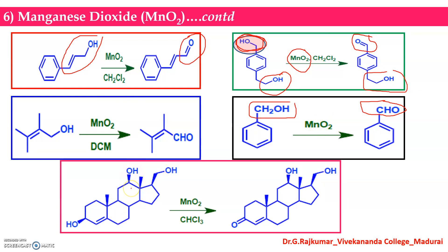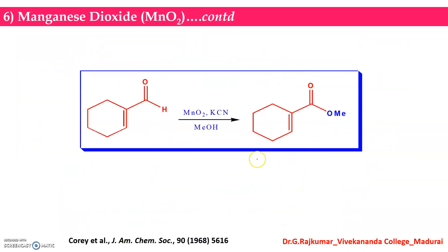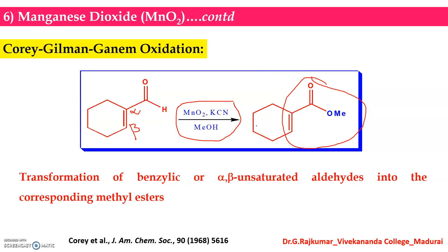When there are three hydroxyl groups, only the allylic hydroxyl group is oxidized into a ketone in the presence of manganese dioxide — the other two groups are not affected. In the presence of manganese dioxide, potassium cyanide, and methanol, an alpha-beta unsaturated aldehyde (where this position is alpha and the next is beta) is converted into the corresponding methyl ester. This reaction is known as the Corey-Gilman-Ganem oxidation.